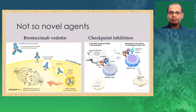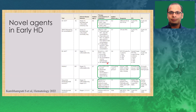Brentuximab vedotin is an anti-CD30 monoclonal antibody drug conjugate bound to the tubulin-disrupting agent MMAE. It is internalized into the cell; MMAE is released by lysosomal proteins, binds to tubulin, and leads to cell death. Similarly, checkpoint inhibitors target immune checkpoints expressed on Hodgkin tumor cells and inactive T cells — CTLA-4, PD-1, and PD-L1/PD-L2 are the important markers. When these are expressed, T cells become inactive and cannot kill tumor cells. Checkpoint inhibitors block these receptors, reactivating T cells and leading to tumor cell death. These agents have been tried in relapsed/refractory and now increasingly in early disease as well.